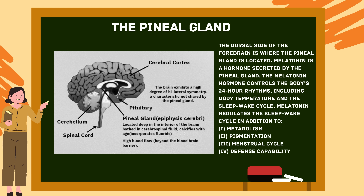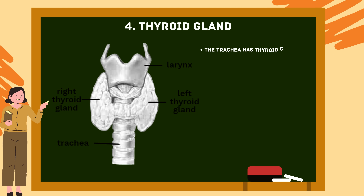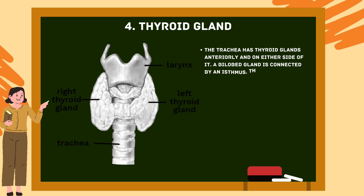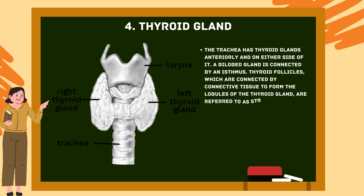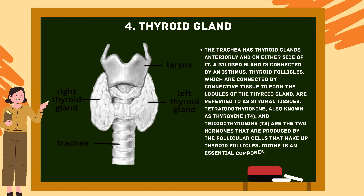Number four: Thyroid gland. The thyroid glands are located anteriorly on either side of the trachea; a bilobed gland connected by an isthmus. Thyroid follicles connected by connective tissue form the lobules of the thyroid gland. Tetraiodothyronine, also known as thyroxine (T4), and triiodothyronine (T3) are the two hormones produced by the follicular cells. Iodine is an essential component needed for the creation of thyroid hormones.